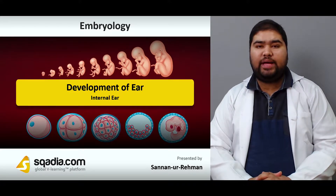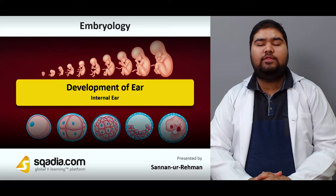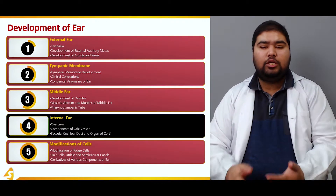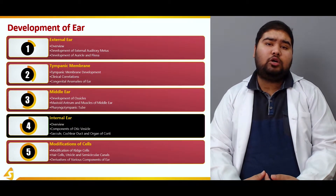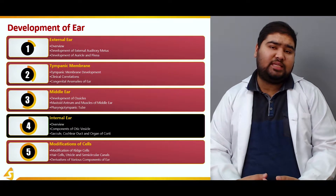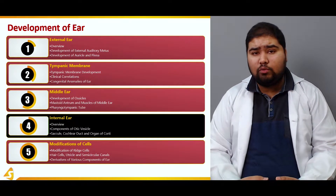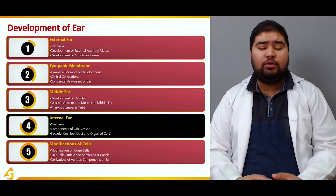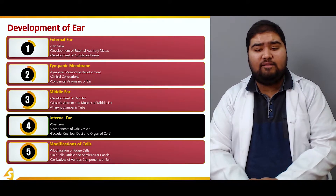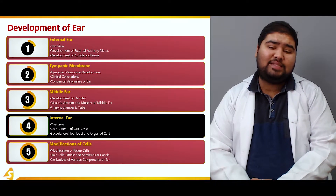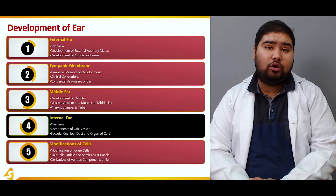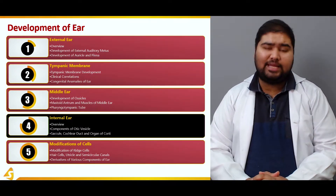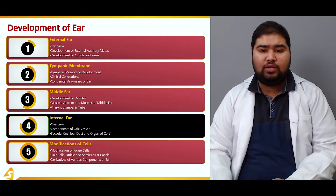Hello everyone, welcome back. We are talking about the development of the ear and in this section we will deal with the internal ear. This section has been divided into an overview in which we will see what are the components of the internal ear and what are the sources of development of these components. Then we will talk about the components of the otic vesicle, the saccule, cochlear duct, and organ of Corti. There are a lot of new things in this section.